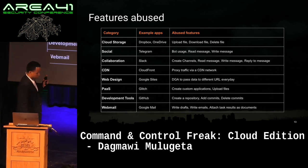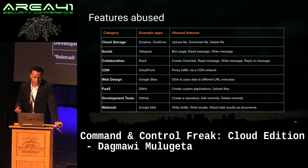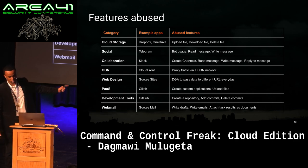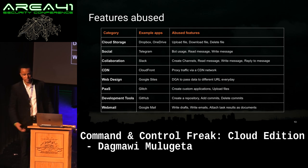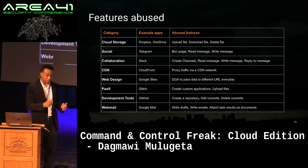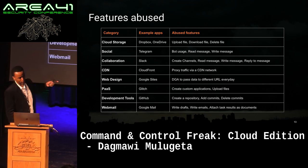We also wanted to look at the features used in each category. For cloud storage apps, attackers are uploading, downloading, and deleting files. In social apps like Telegram, we've seen bot usage — reading and writing messages. In collaboration apps like Slack, we've seen channel usage and replying to messages. In CDN apps like CloudFront, we've seen traffic proxying. In web design apps like Google Sites, we've seen DGA-like algorithms to pass data to a different URL every day. Attackers are not just shoving their existing workflow into the cloud app — they're actually leveraging the features these cloud apps provide.